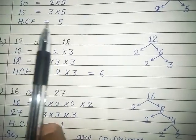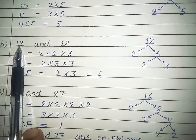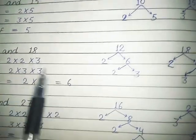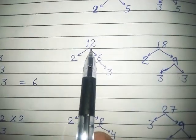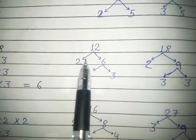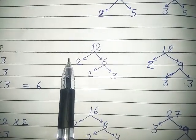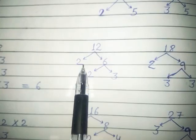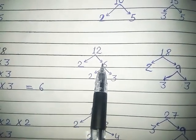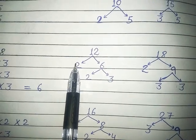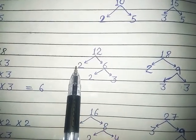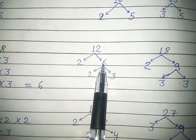So what will you do first? You will make factors, like in the previous exercise. For 12, we start the factor tree. 2 and 6 make 12. So 12 equals 2 into 6. You will write it here: 2 into 6.